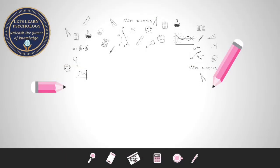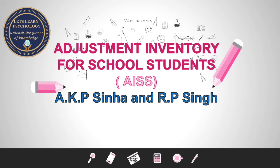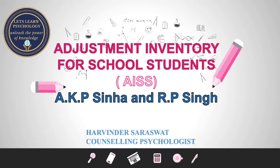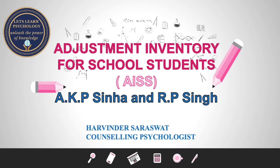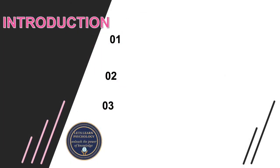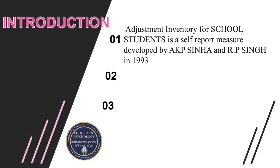Welcome friends, today we will be learning about the Adjustment Inventory for School Students, developed by A.K.P. Sinha and R.P. Singh. The Adjustment Inventory for School Students is a self-report measure developed in 1993.